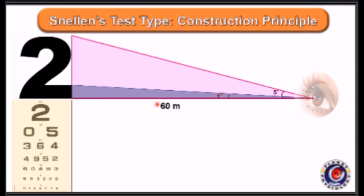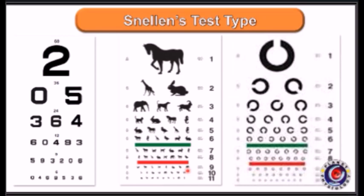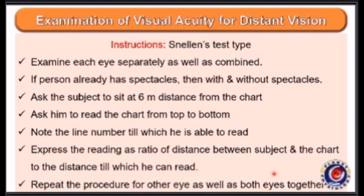Similarly, each letter in the last line makes a visual angle of five minutes, and its thickness makes a visual angle of one minute from a distance of six meters. These test types are available in various languages, numbers, pictures, and for illiterates we can use a special test type called Landolt's rings. Distant vision is examined for each eye separately as well as combined. If the person already has spectacles, the procedure is repeated with spectacles.